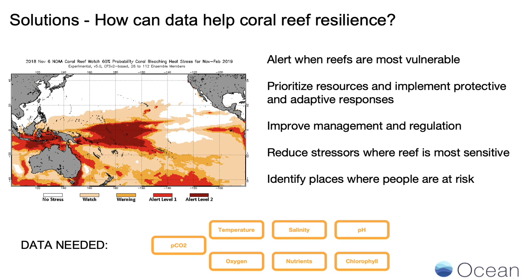If we have good ocean temperature data and combine it with other data, we can create alerts to know when reefs are vulnerable. We can help prioritize resources and implement protective and adaptive responses in coral reefs facing the highest heat stress. We can improve management and regulation of reefs most vulnerable to a changing ocean — for instance, reducing runoff and nutrient pollution from coastal activities, reducing fishing pressure, and participating in active coral reef restoration. And we can identify those places where people will be at risk, which is important for how we manage the coastal communities where these impacts are likely to occur.